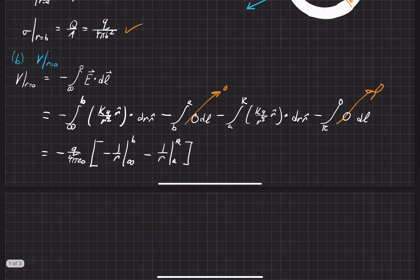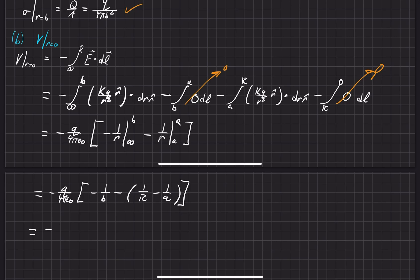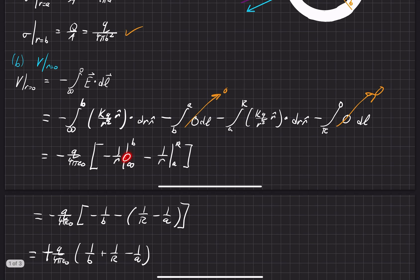Evaluating those limits, we get Q/(4πε₀) times the quantity: −1/B from the first integral, then minus (1/R − 1/A) from the second. Taking out the negative sign makes the whole expression positive, giving us Q/(4πε₀) · (1/R − 1/A + 1/B). That is the potential from bringing a test charge all the way from infinity into the center of that charge distribution.